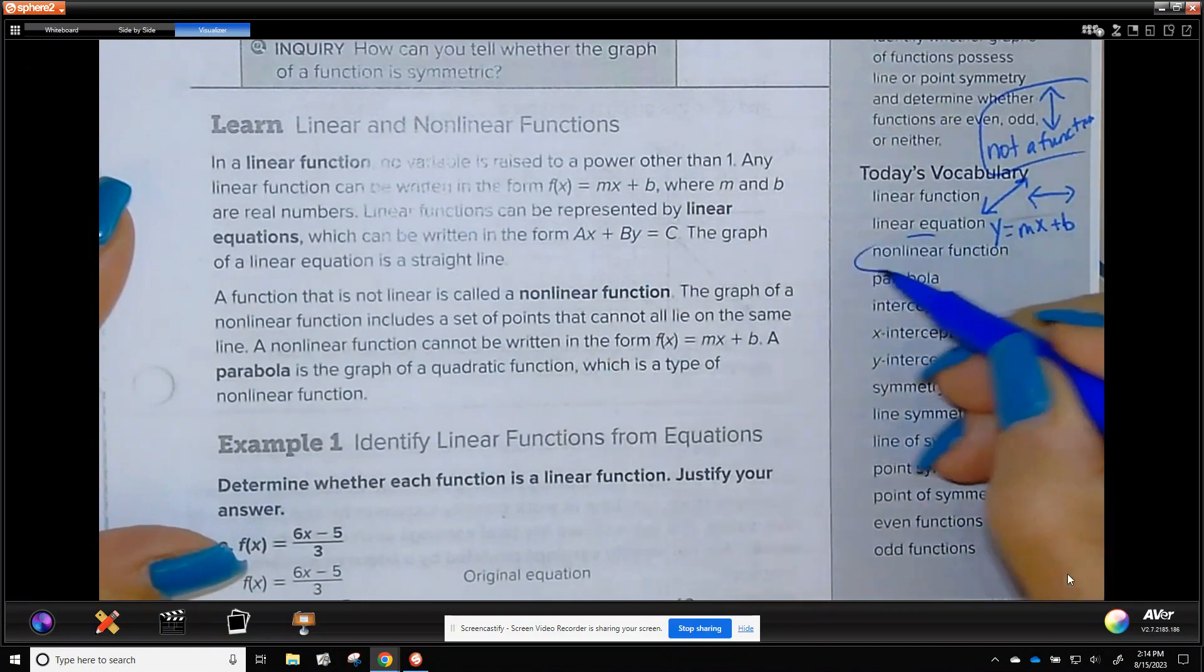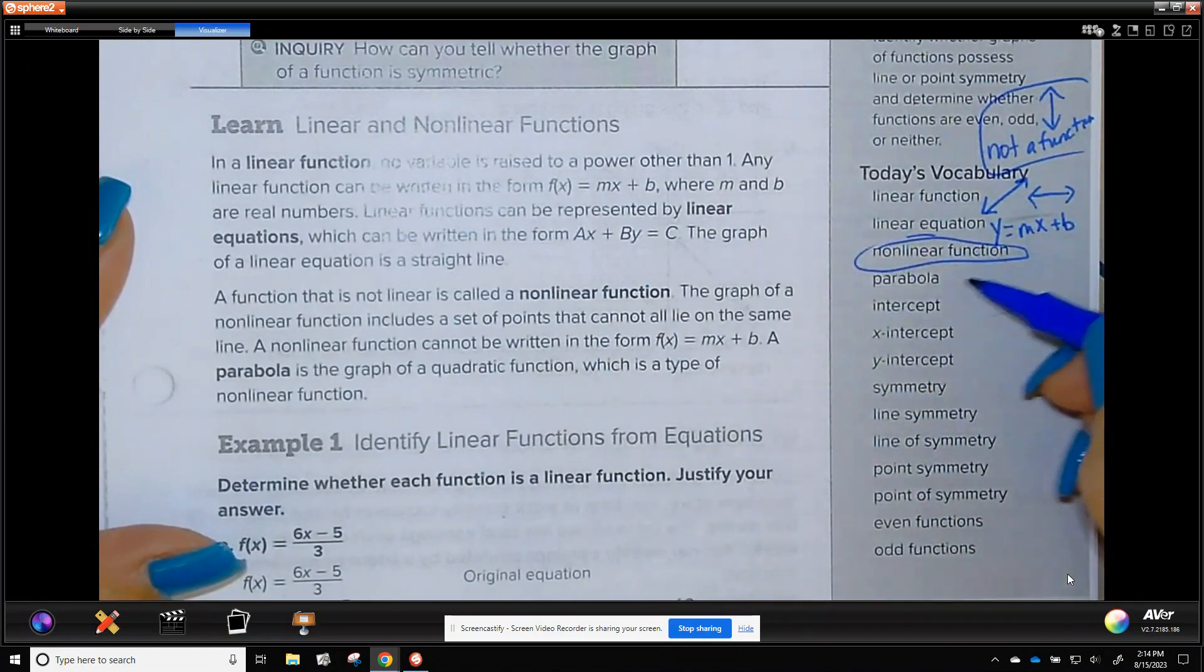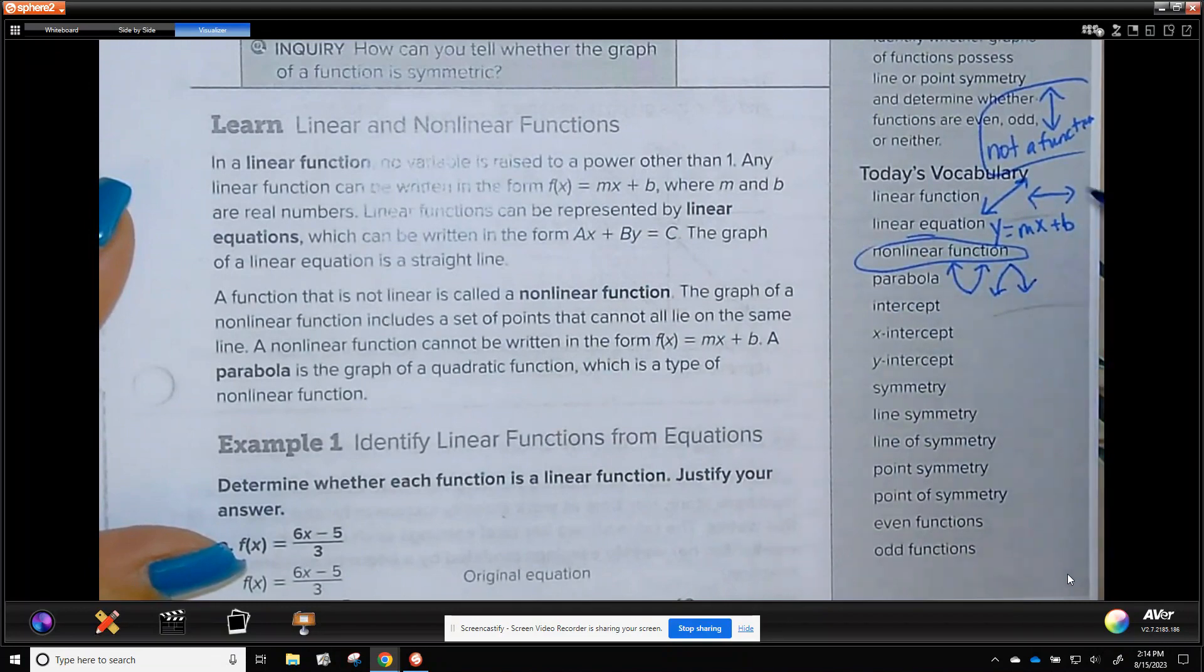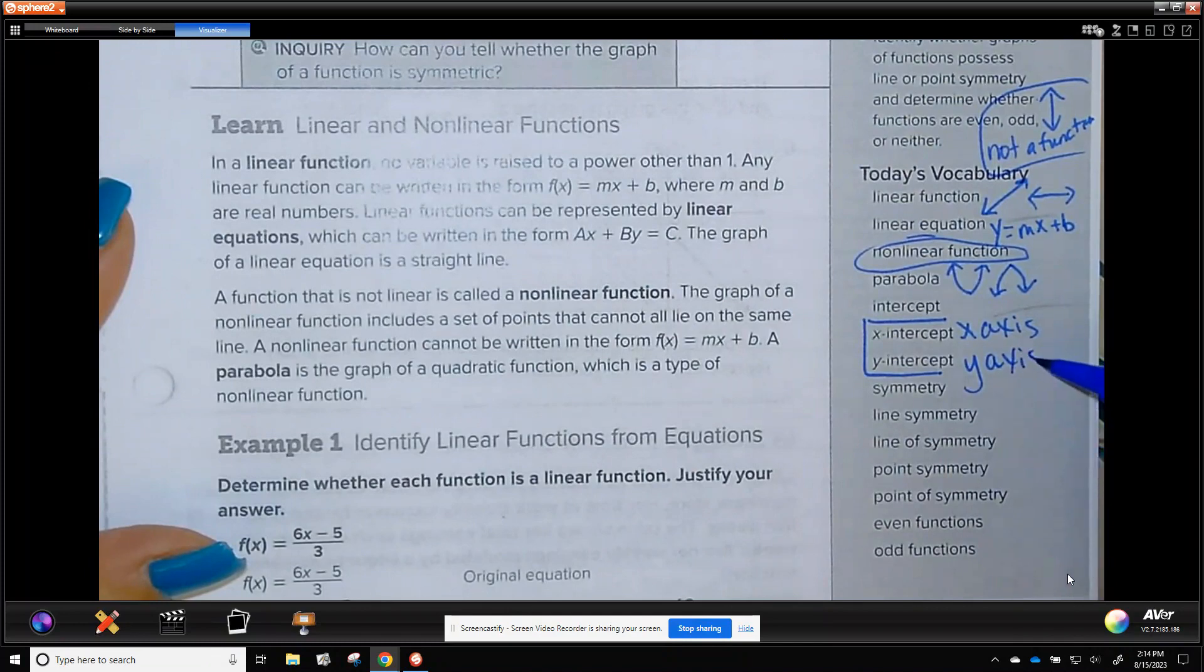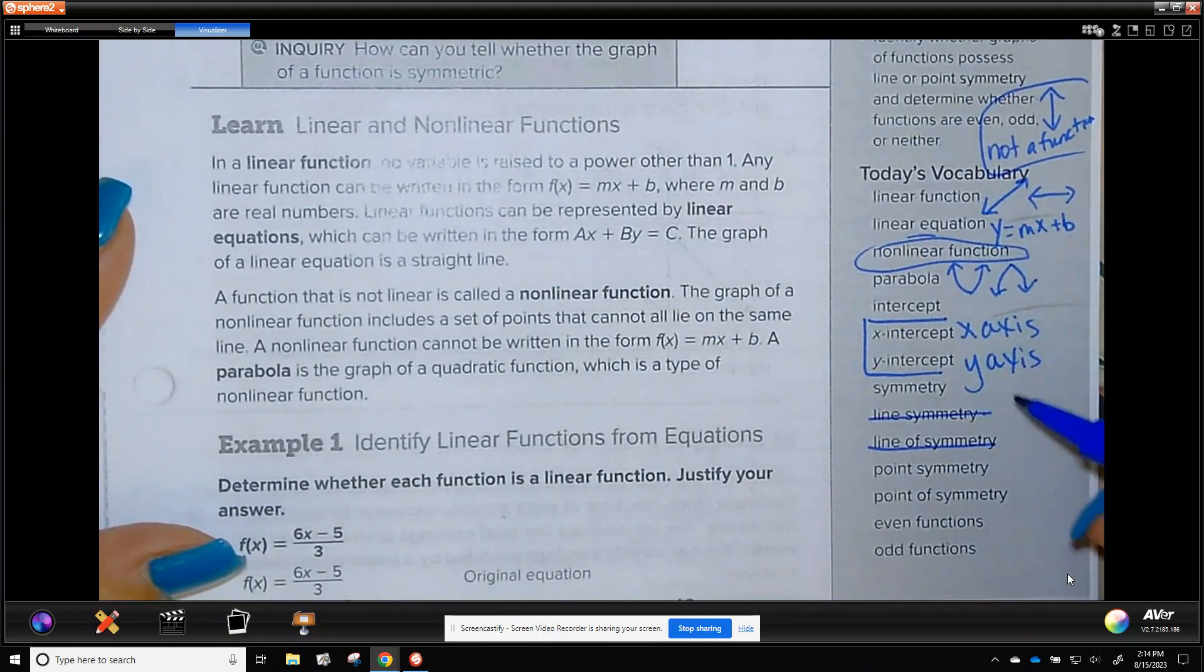Nonlinear function - not a line. Parabola, either positive or negative. Intercept, we have these two. X-intercept is on the x-axis. Y-intercept is on the y-axis. Line of symmetry, line symmetry, point symmetry - we're not going to be doing point of symmetry, but we do know symmetric.